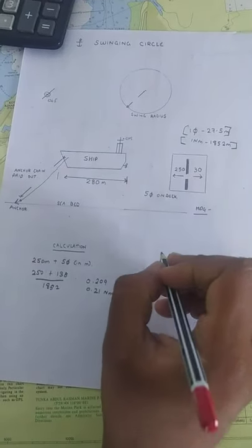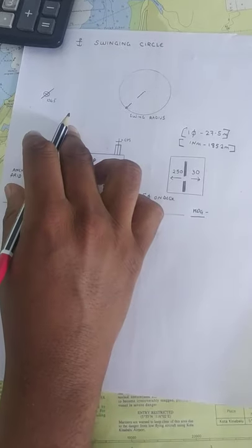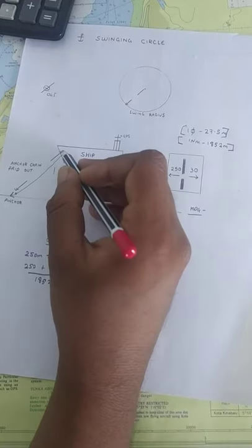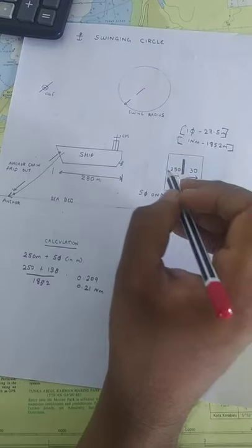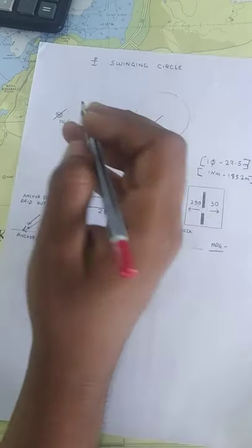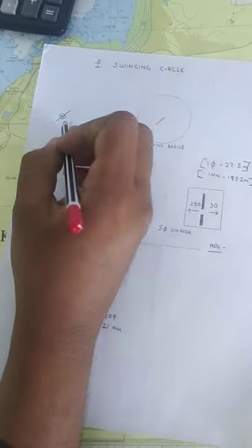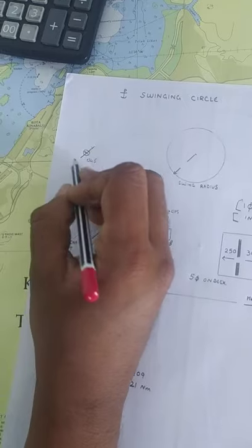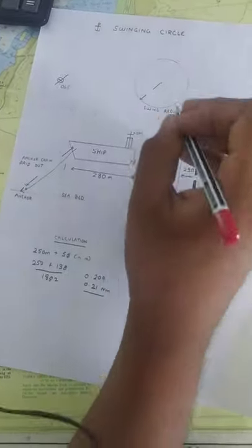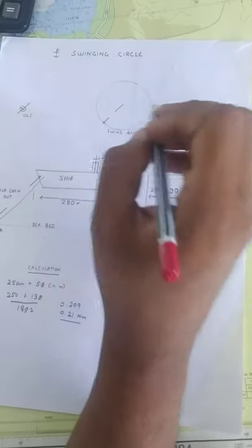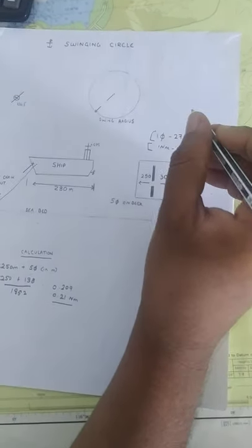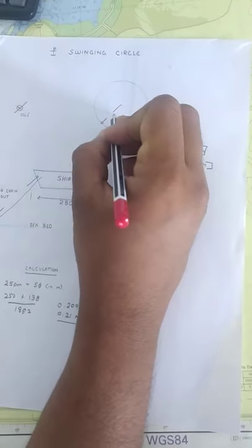Once you drop your anchor, take the heading, convert your ship's distance from the GPS to the anchor position into nautical miles. Cut it on your heading. From there, you draw your swinging circle. The swinging circle is 0.21 nautical mile. You take 0.21 nautical mile on your compass, measure it on the chart and draw a circle.